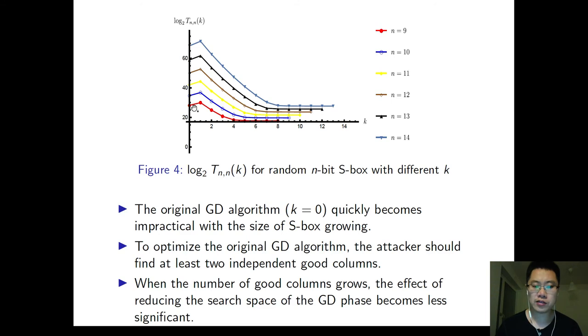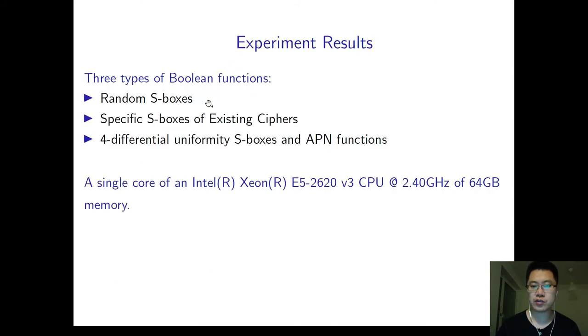To optimize the original GD algorithm, the attackers have to find at least two independent good columns. When the number of good columns grows, the effect of reducing the search space becomes less efficient.